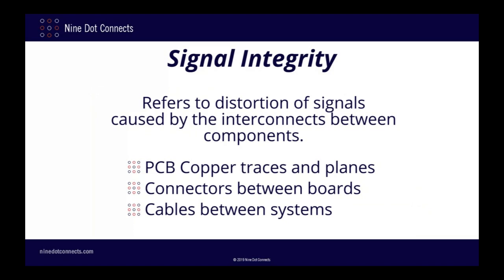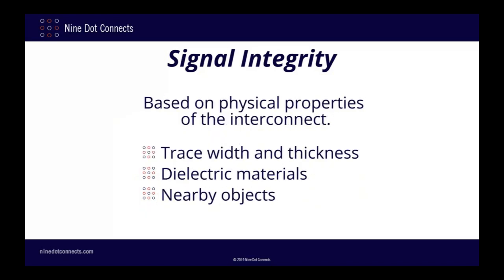So when I say signal integrity, what am I talking about? To put it simply, signal integrity refers to the issues caused by the interconnects between components rather than the operation of the actual components themselves. For a PCB designer, these interconnects obviously refer to the copper traces. In addition to the properties of the actual trace itself, there are several other factors that affect the integrity of the signal — the thickness and material of the dielectric layers, which layer the trace is on, and the location and properties of any other objects in proximity to that trace.